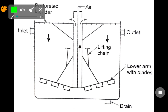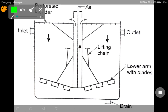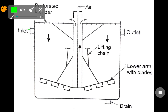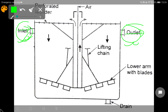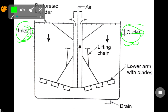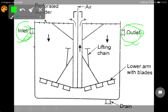The Dorr agitator is provided with inlet and outlet connections at opposite sides of the tank. It is extensively used in both the metallurgical and chemical industries, as well as for the washing of finely divided solids.